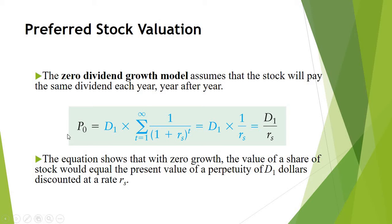As part of this model, value of the preferred stock — denoted by P0 — is equal to D1 divided by Rs. Here, D1 indicates the dividend payments of the preferred stock and Rs indicates the discount rate or required rate of return of the preferred stock.